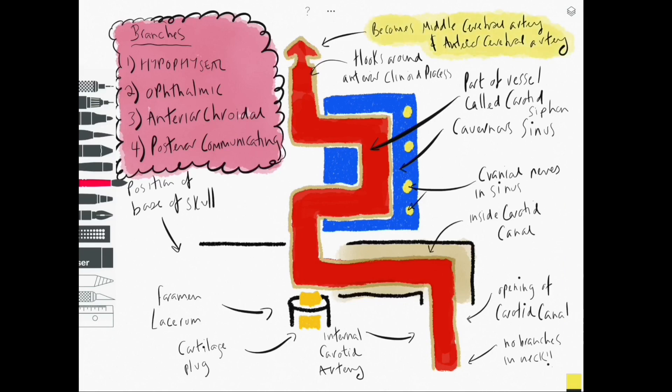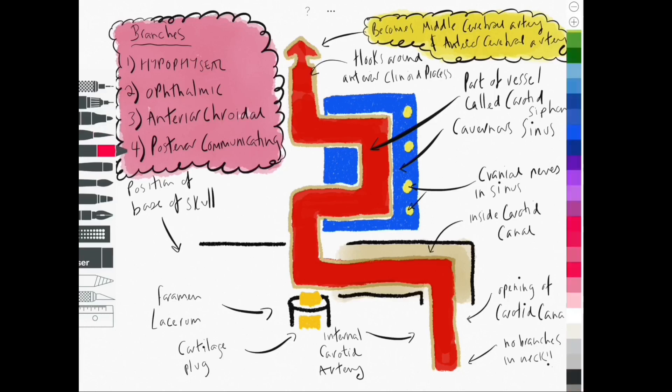Then we have the posterior communicating branch which leaves just before the terminal branching into the middle and anterior cerebral arteries and joins up with the posterior cerebral artery. This would then connect the anterior and posterior circulations.